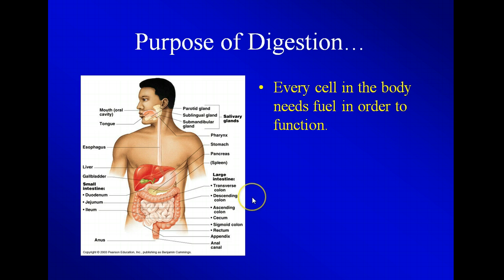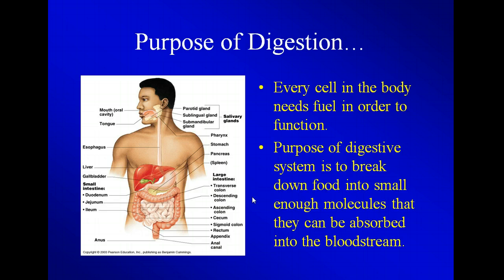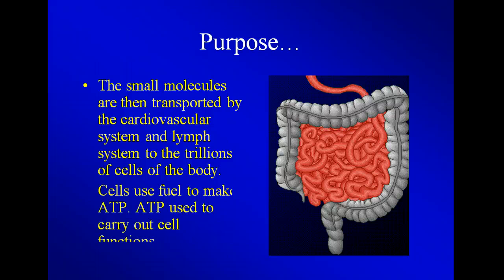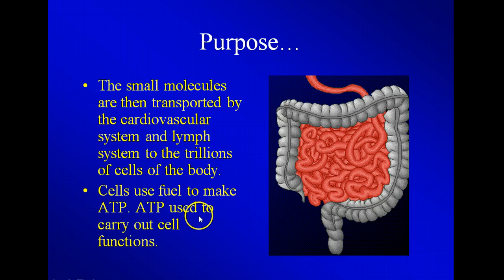The purpose of digestion is that every cell in the body needs fuel. We're going to break molecules down so they can be absorbed into the bloodstream, and the primary area for absorption is going to be the small intestine. Once the molecules get into the bloodstream, they travel through the bloodstream and through the lymph system to the trillions of cells of the body, where they are used to make energy or to provide other sources for the cells. The cells use fuel to make ATP — we need it to carry out the functions of the cells, including muscle cells and brain cells.